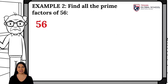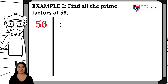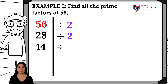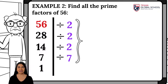In this other example, we will find the prime factors of 56. We will repeat the process. 56 is divisible by 2 since it ends in 6, an even number. Then, 56 divided by 2 is 28. 28 is also divisible by 2, giving 14. 14 is also divisible by 2, giving 7.